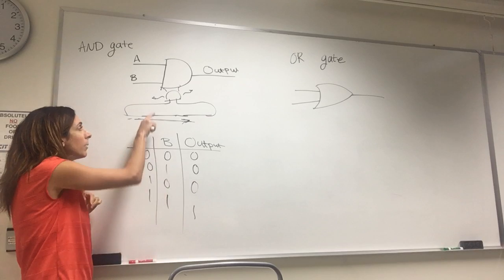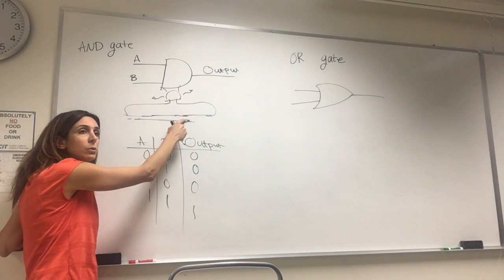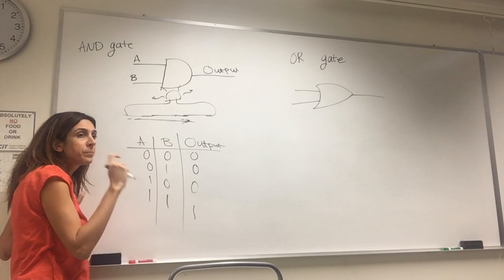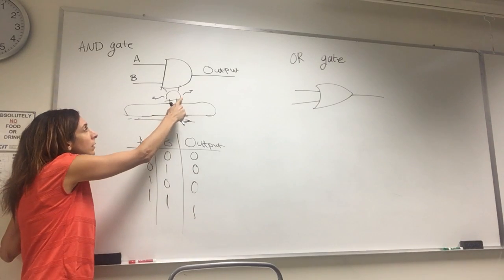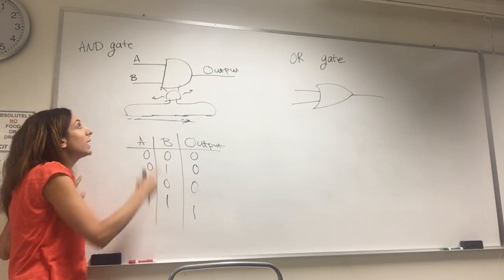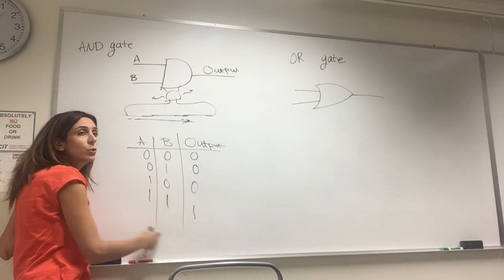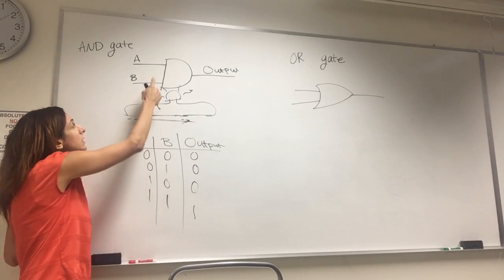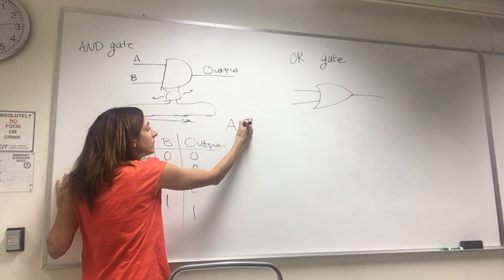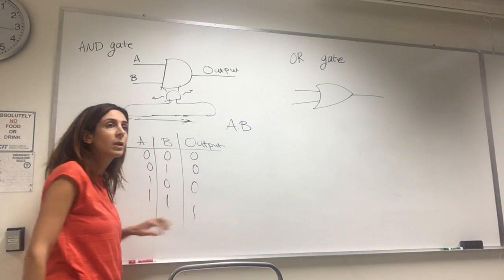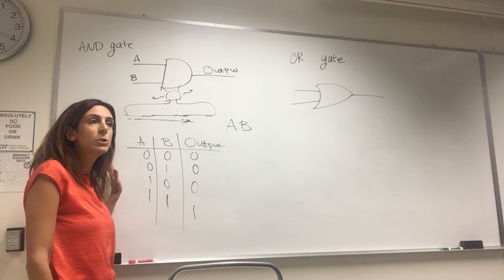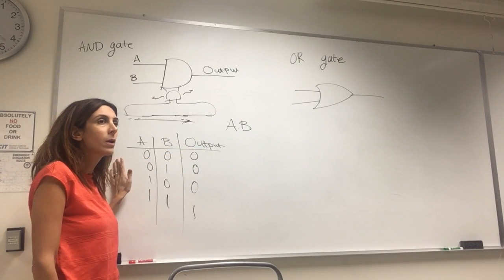So the only case I have an output is when I close two switches. That means I'm applying voltages to my transistor. As you know, these switches are transistors. In that case, I have an output, so my output is one. So that's AND. This is called truth table. This is the symbol for an AND gate. The Boolean expression for AND gate is A dot B. It's not multiplication. It's AND. Any questions so far?